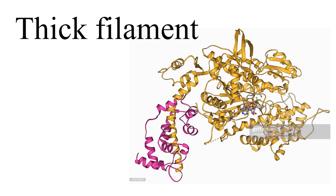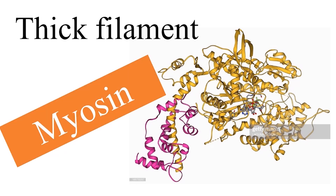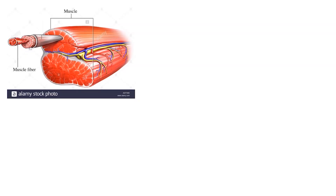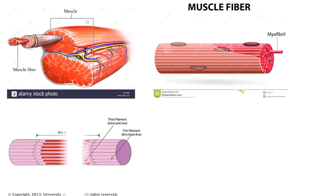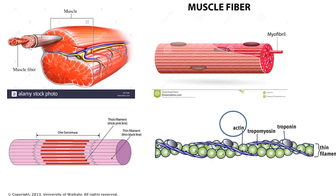The major proteins in the thick filament are the myosin molecules. The thick filament is composed of several hundred myosin molecules. You have learned the composition of skeletal muscles and how the different proteins are arranged. Skeletal muscles are made up of long muscle fibers. A muscle fiber is made up of thin myofibrils. Each myofibril is made up of sarcomeres, which are made up of thin filaments and thick filaments. The thin filament is made up of the proteins actin, tropomyosin, and troponin. The thick filament is made up of myosin.